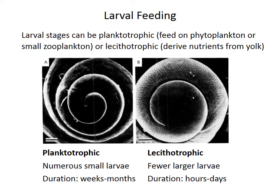Larvae can have different sources of nutrition. Some are planktotrophic, which means that they eat plankton, typically phytoplankton or small zooplankton. In contrast, lecithotrophic larvae don't actually feed, instead relying on a stored reservoir of yolk. The two feeding modes can be distinguished, for example in gastropods, by the size of the larvae. Lecithotrophic larvae, or larval shells, are larger because they require a larger volume of yolk. Species with planktotrophic larvae produce smaller, more numerous larvae, whereas lecithotrophic species produce larger yolk-filled larvae, but fewer of them.